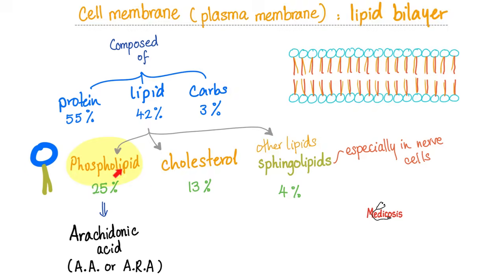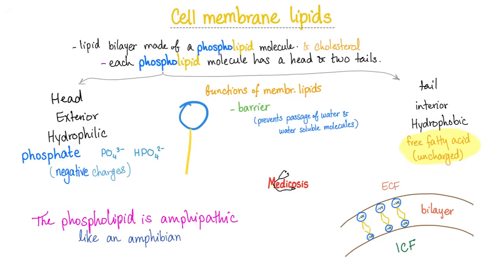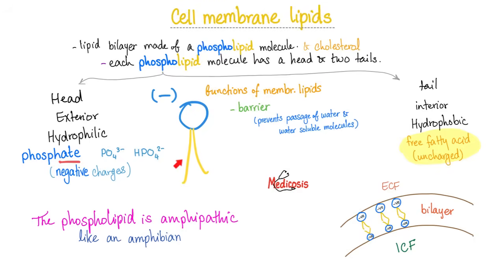Why do you call them phospholipids? Because they have a phosphate head and lipid tails — one head and two tails. The head is charged or ionized because phosphate carries a negative charge. I've taught you in my chemistry playlist that if the word ends in 'ate,' odds are it is negatively charged, such as phosphate, sulfate, carbonate, and more. So the phosphate head has a negative charge, and that's why it's water-soluble. However, the tails — fatty acids — are not charged, and that's why they are lipid-soluble. Hydrophilic head, but hydrophobic tails.